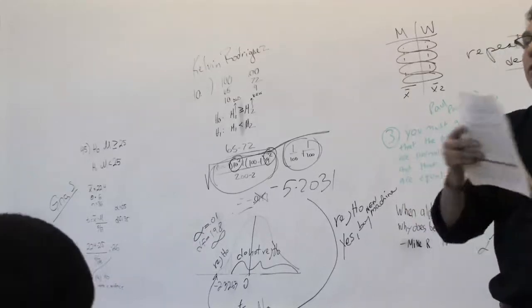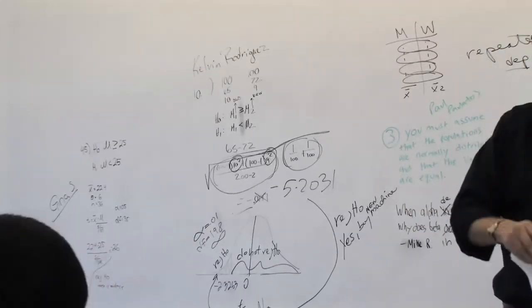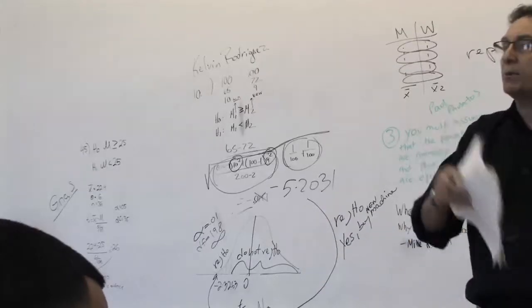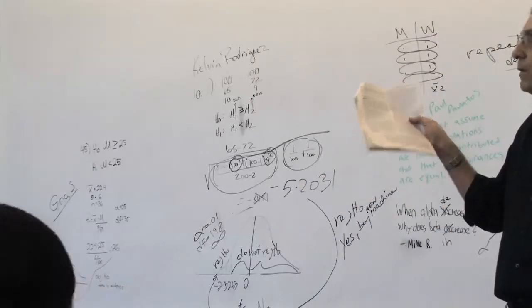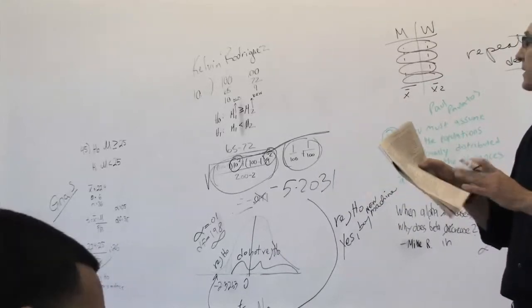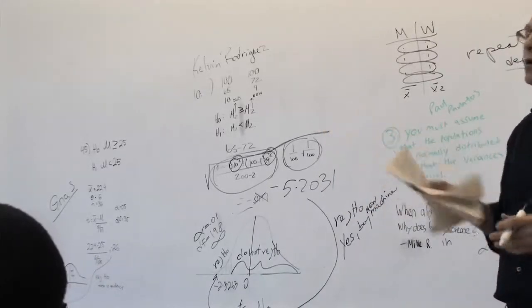Your first decision you have to make is it one sample or two samples? In other words, is it chapter 9 or chapter 10? If you read through the question carefully, there's only one, we're talking about one population of one sample. It's clearly not chapter 10, so the basic structure is right.